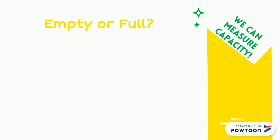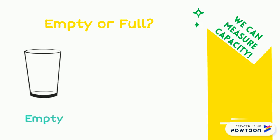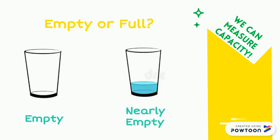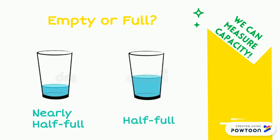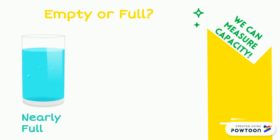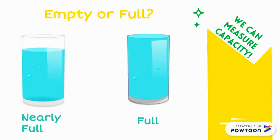When talking about capacity, we may use the terms empty or full. This glass is empty. This glass is nearly empty. This glass is nearly half full. And this glass is half full. This glass is nearly full. This glass is full.